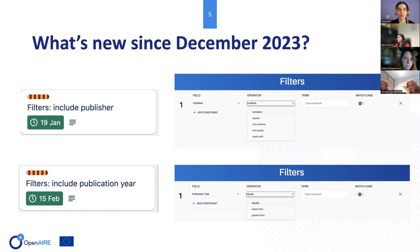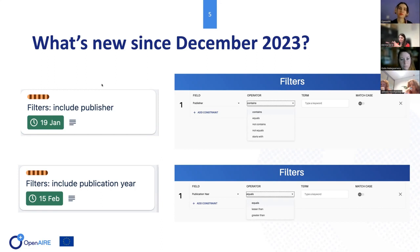You can apply different operators. For example, you can use classical string operators for the publisher field, while for the publication year you can select a specific year, or use lesser than or greater than, so you can filter research products published in a specific year or date range. You can apply these filters to a specific data source in your configuration, but you can also apply them to the whole OpenAIR graph. For example, if your research infrastructure used its name among the publishers, you can exploit that to include those products in your gateway.